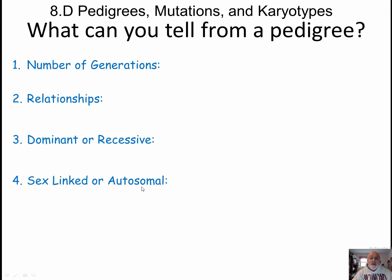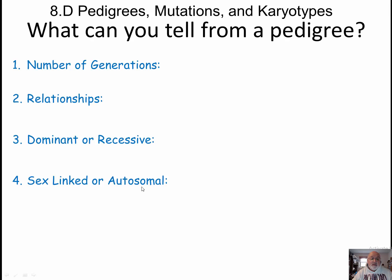You can also tell whether it's sex-linked or autosomal. This one only affects the one individual. Here's a pedigree. If we take a look at it, we can see we have one, two, three generations.